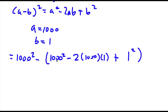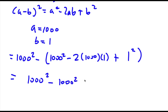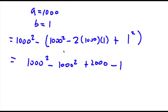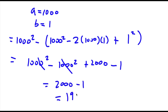And now this is equal to 1000 squared minus 1000 squared plus 2000 minus 1. Now, 1000 squared and 1000 squared cancel out. So all I'm left with is 2000 minus 1, which is equal to 1,999.